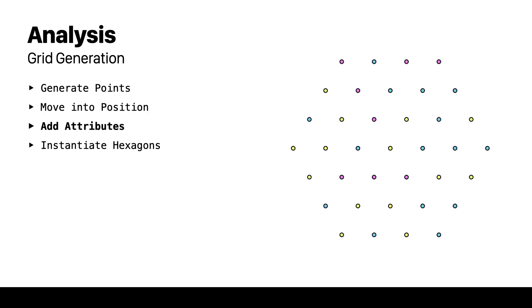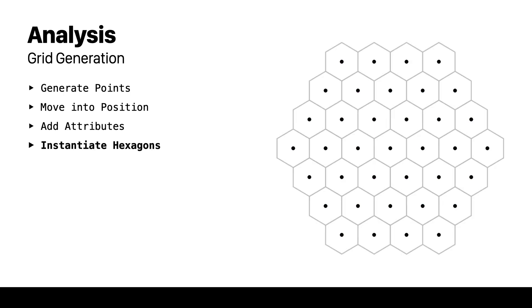We then generate different attributes like color, height position, coordinates, orient and groups. And finally instantiate the hexagon shapes to the points.